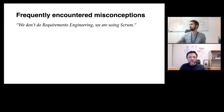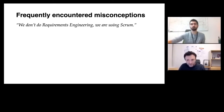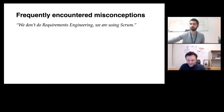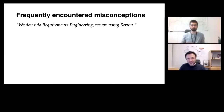One of them being: 'We don't do requirements engineering, we are using Scrum.' You might think that if you follow a certain reference model like Scrum, and just because it doesn't say anything about requirements engineering, that you are not doing requirements engineering. But in the end, you are still working and handling requirements. You cannot blame the people who say things like these, because the term requirements engineering is quite old-fashioned. The term requirements engineering was coined in 1978 in its first appearance in an academic journal, the Transactions on Software Engineering.